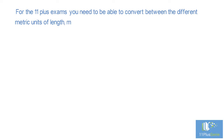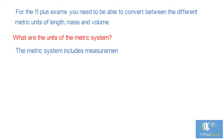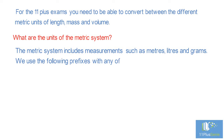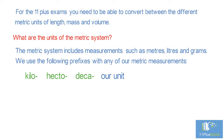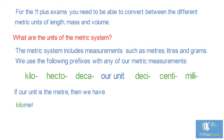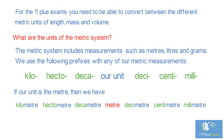Converting between metric units: for the 11 plus exams you need to be able to convert between the different metric units of length, mass, and volume. The metric system includes measurements such as meters, liters, and grams. We use the following prefixes with any of our metric measurements: kilo, hecto, deca, our unit, deci, centi, milli. If our unit is the meter, then we have kilometer, hectometer, decameter, meter, decimeter, centimeter, and millimeter. A useful thing to remember is that the factor between two adjacent units is 10.